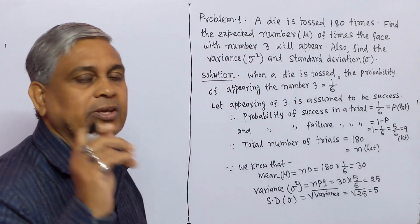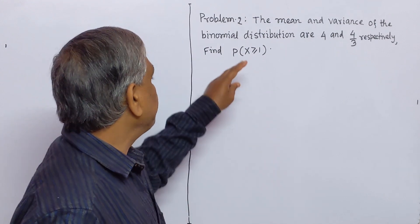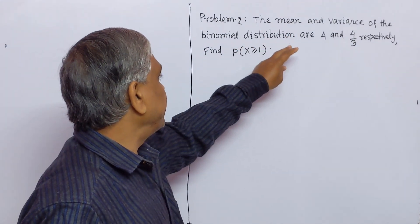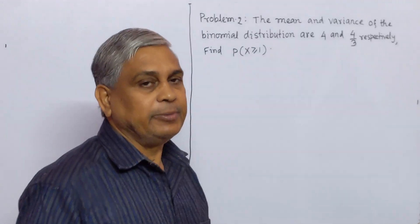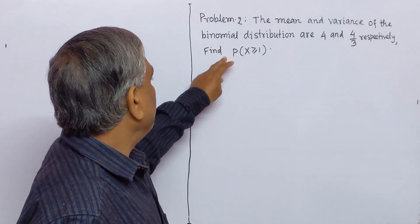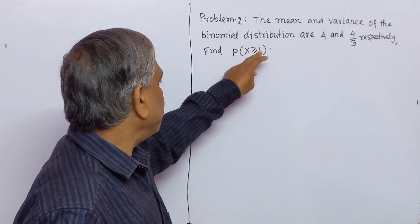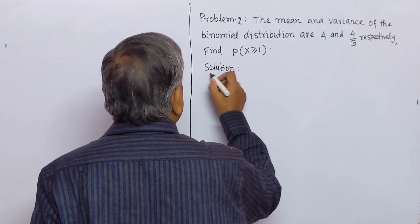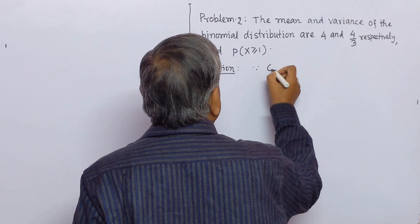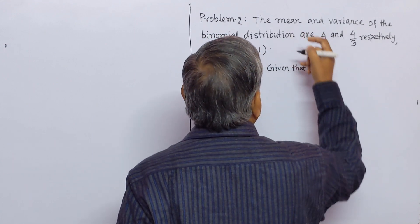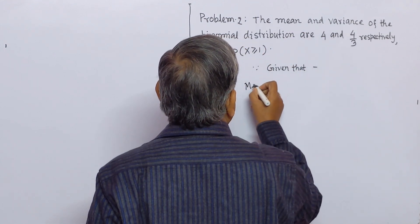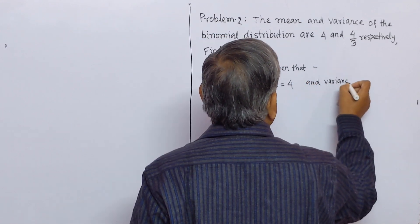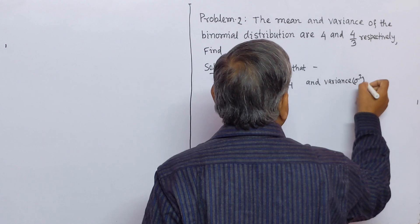So our problem is solved. Now we solve the next problem. The mean and variance of the binomial distribution are 4 and 4 by 3 respectively. Find probability of random variable x greater than or equal to 1. Now we solve this solution.